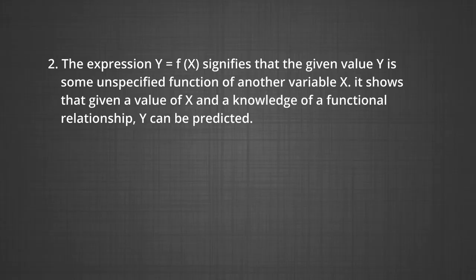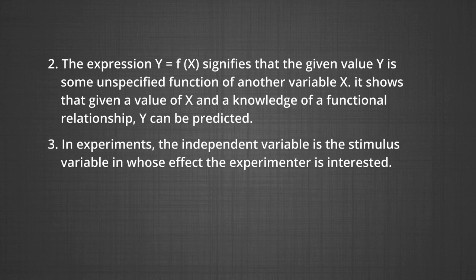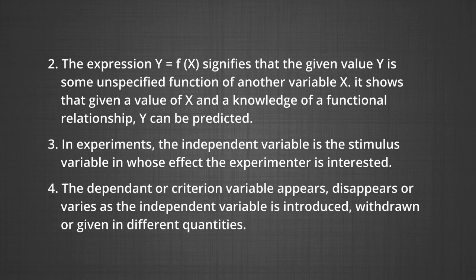The expression y = f(x) signifies that the given value y is some unspecified function of another variable x. It shows that given a value of x and a knowledge of the functional relationship, y can be predicted. In experiments, the independent variable is the stimulus variable in whose effect the experimenter is interested. The dependent or criterion variable appears, disappears or varies as the independent variable is introduced, withdrawn or given in different quantities.